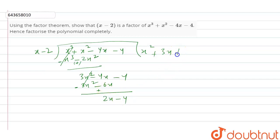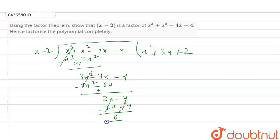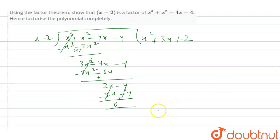Next, 2 times x gives 2x, and 2 times minus 2 gives minus 4. Changing signs, this gets cancelled, giving a remainder of 0. Since the remainder is 0, x minus 2 is a factor.